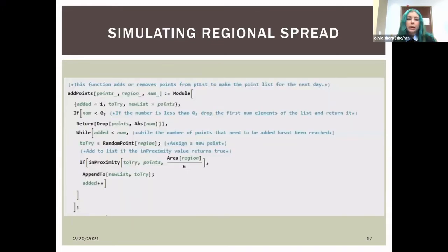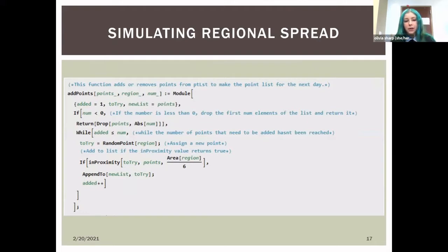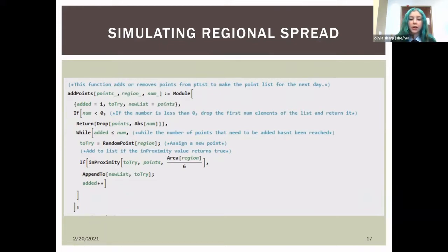To simulate this as accurately as possible, we added a function called add_points, which references the first infection — represented by a point — selects a random nearby point, and uses our function in_proximity to check the distance from the first infection to that random point to determine whether it would be an accurate new infection, creating a more realistic regional spread.